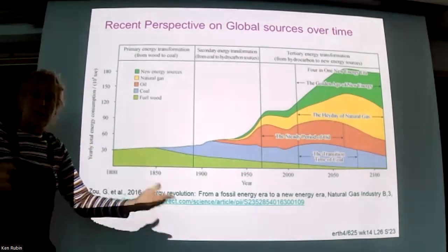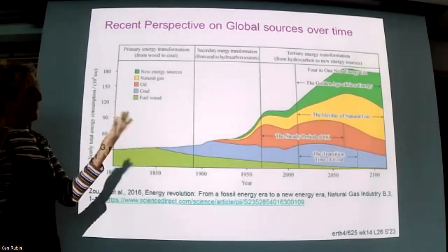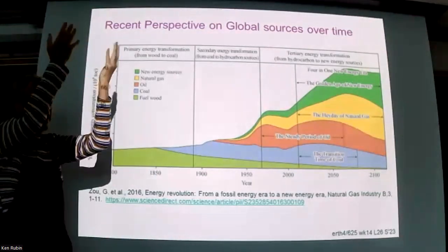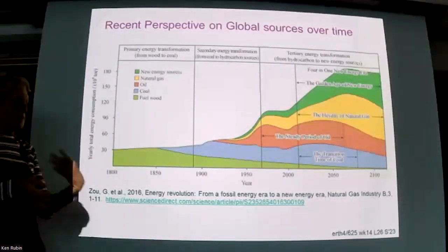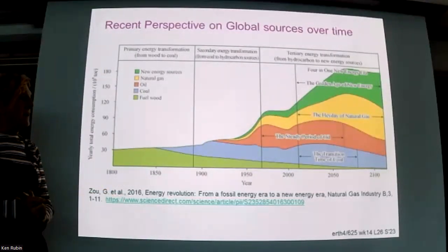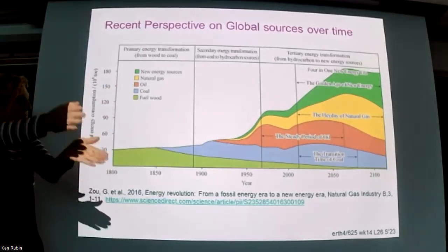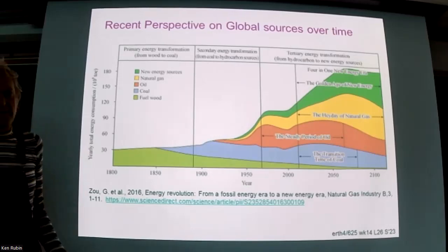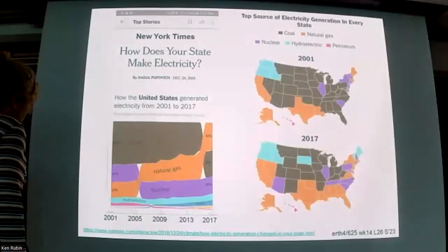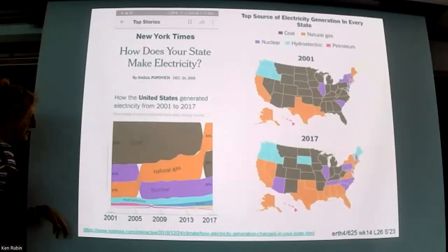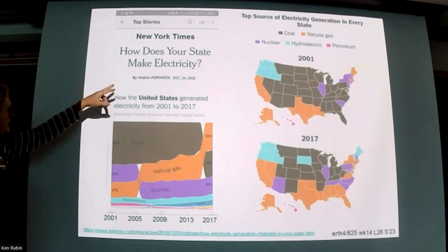People have long discussed 'peak oil' — the point of maximum oil production after which output declines. That discussion started in the 70s, when peak was always said to be a few decades off — but it remains a few decades off. Obviously moving that goalpost means new discoveries keep being made. What started as a New York Times story assessed the US energy mix from the start of the century through publication.